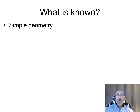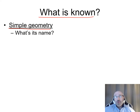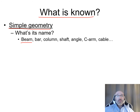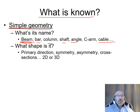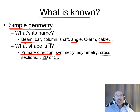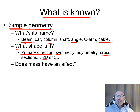Now we dive deeper into 'what is known' for simple geometry cases. We ask: what are we physically dealing with — is it a beam, bar, column, shaft, angle, or cable? Based on what it is, there are governing equations and tables we can reference. We also ask about its shape, primary direction, dimensions, symmetry, cross-sections, area calculations, and whether we're dealing with 1D, 2D, or 3D. Mass also matters as it dictates what equations and relationships we use.